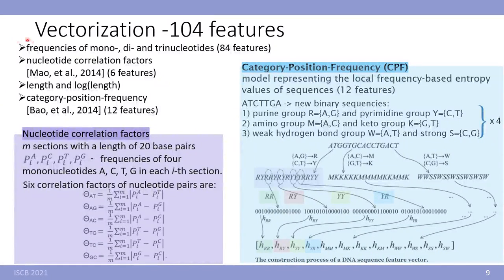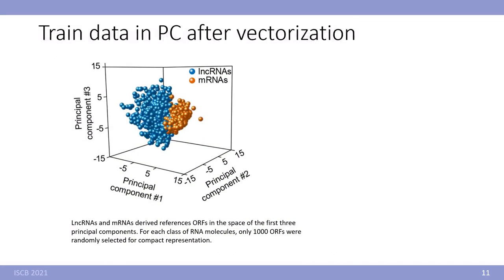We vectorize our sequences into 104 features. There are frequency of mono, di and trinucleotides, nucleotide correlation factors, length and logarithmic length, and category position frequency. This is our training dataset after vectorization in space of principal components. As you see our features will separate coding and non-coding transcripts.